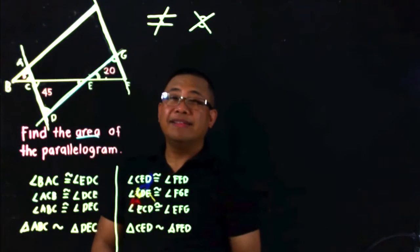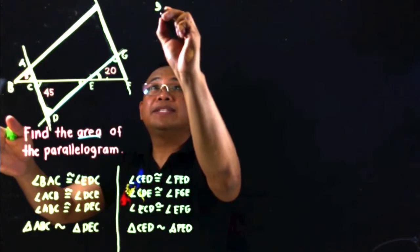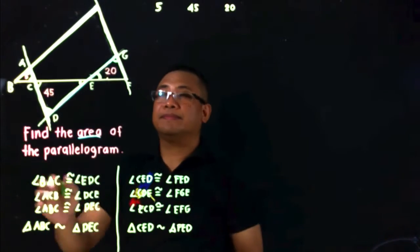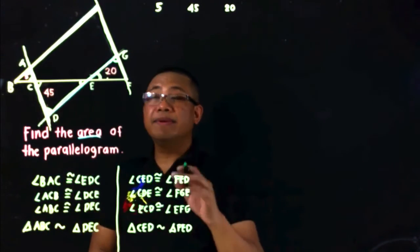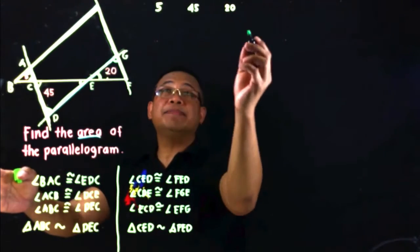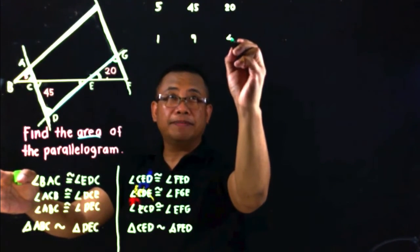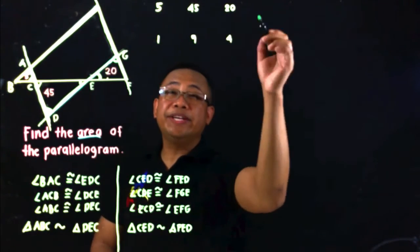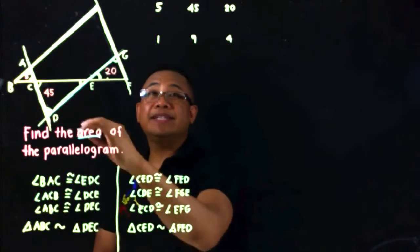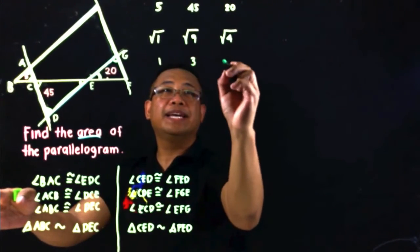Since the three triangles are similar, their corresponding parts are proportional. Looking at the given areas — 5, 45, and 20 — there is a common factor of 5. Dividing each by 5 gives 1, 9, and 4. Since areas are in square units, the proportionality of corresponding sides is the square root of these values: √1, √9, √4, which simplify to 1, 3, and 2.